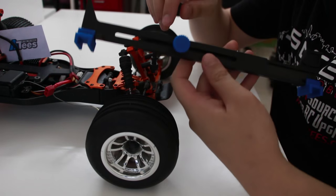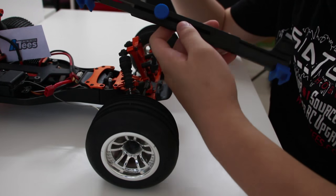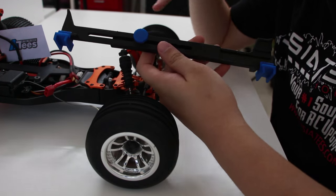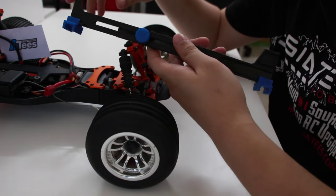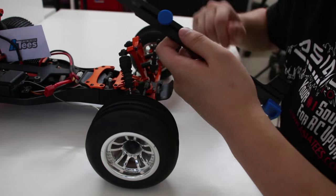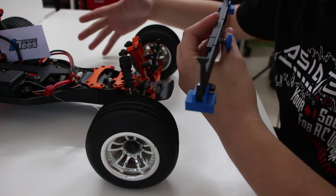Here we have RPM's Toe Gauge. This will work for trucks, buggies, and on-road cars and it'll also work for the shorter wheelbases. All you have to do is adjust the length to figure out which car you're going to use it for. Right now we're going to test it on an HPI buggy.